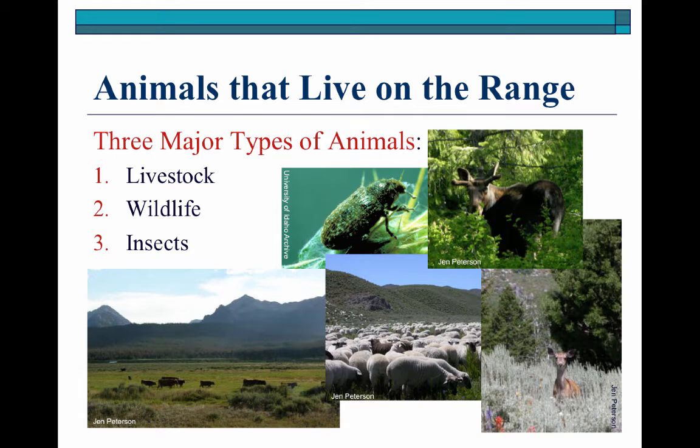The animals that are going to be present on rangeland are really categorized into three major types: livestock, which I refer to as domestic species; wildlife species; and then insects. Insects are critical to rangeland habitat, so we don't want to ignore those organisms.